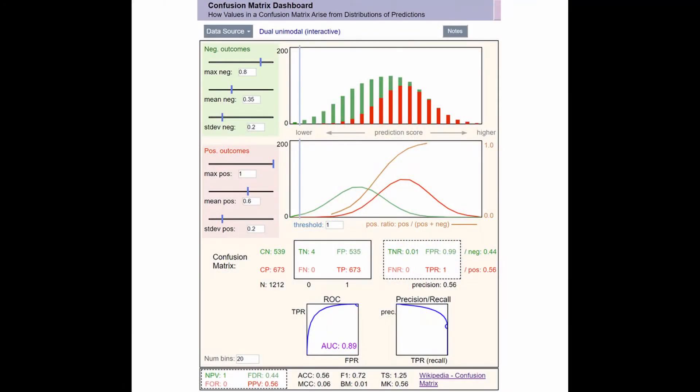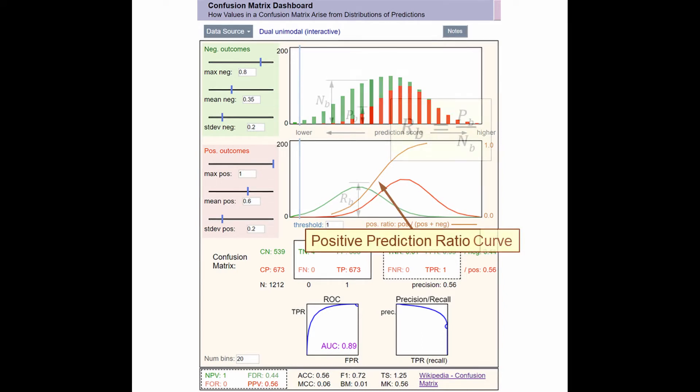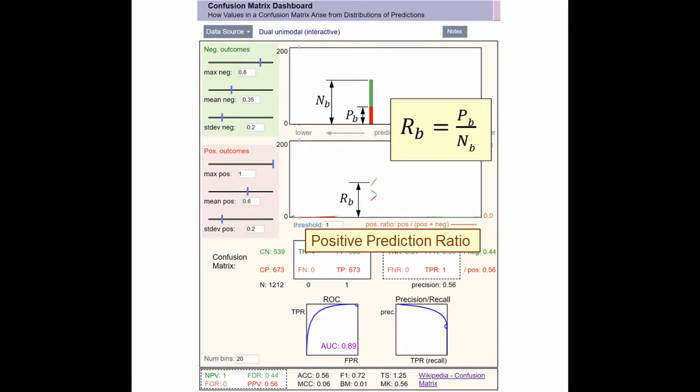Instead, let's consider a different way to assess bias in a decision process. The confusion matrix dashboard includes a curve that shows positive prediction ratio across prediction score bins. That's the ratio of positive outcome events to all predictions that land in that bin.